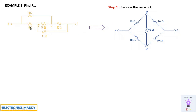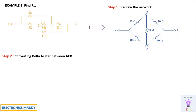Tracing the redrawn circuit: from A to C there is a 10 ohm resistor, from A to D a 10 ohm resistor, from C to D a 10 ohm resistor, from C to B a 10 ohm resistor, and from D to B another 10 ohm resistor. We can see a delta network formed by nodes A, C, D, and apply delta-to-star transformation to that triangle.